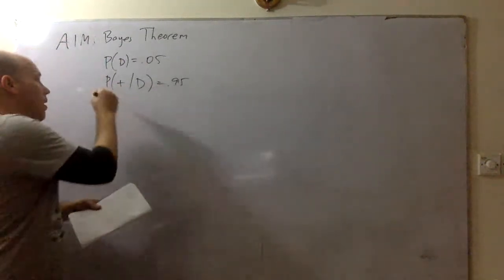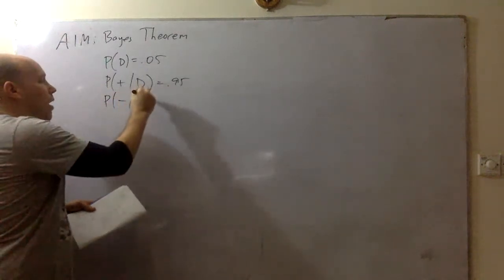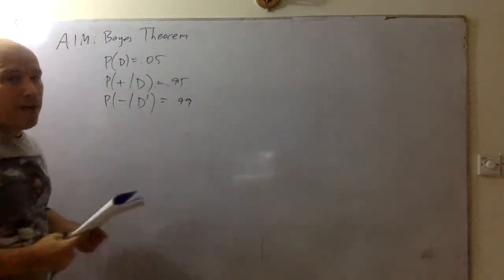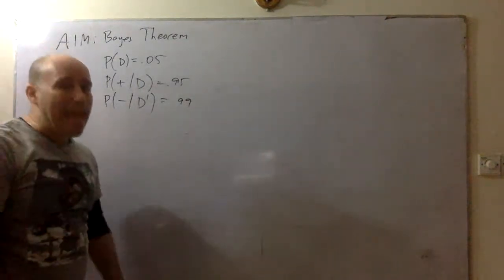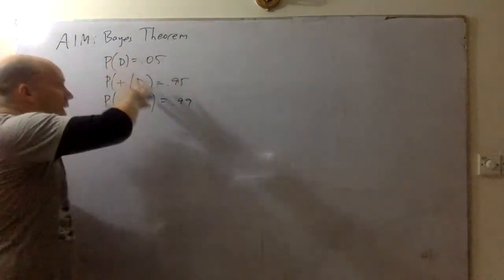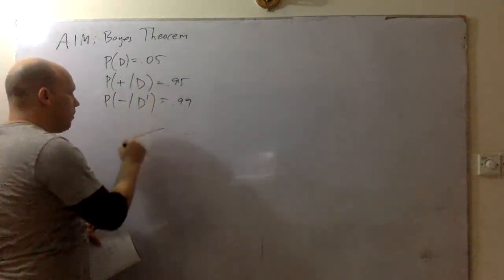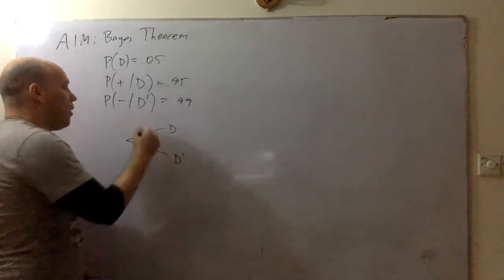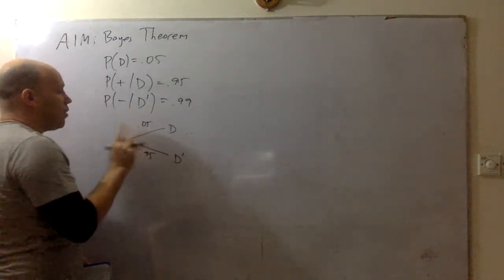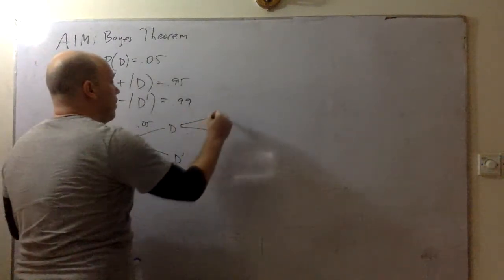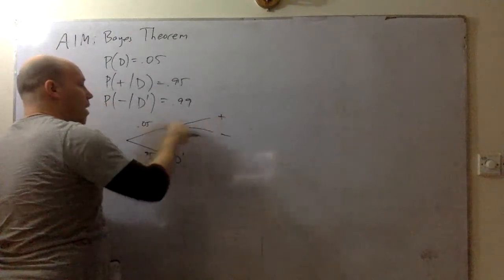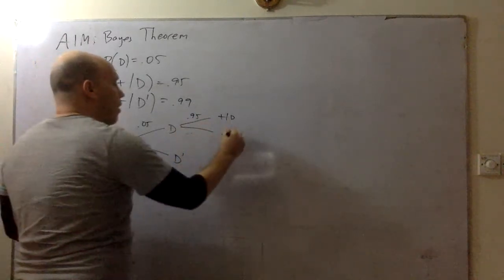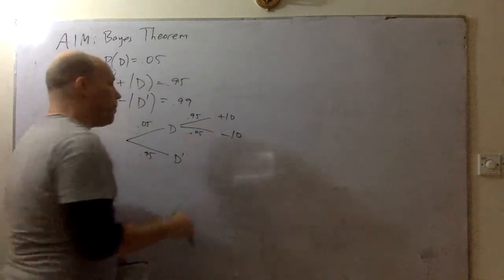So if you have the disease, there's a 95% chance that the test will be positive, which is what you'd kind of expect. And given that you do not have the disease, there is a 99% chance that the test will come back negative. The information given leads you to think that D happened first, so we'll make our tree. We know there's a 5% chance you have the disease, 95% chance you don't. Given that you have the disease, there's a 95% chance of positive, and a 5% chance of negative.